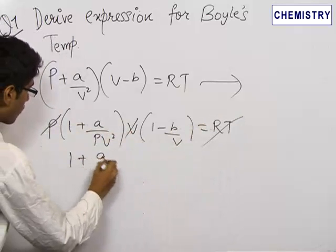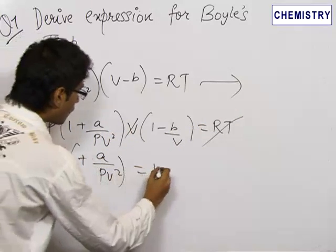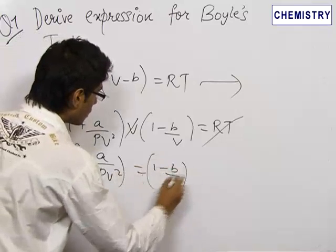So, 1 plus A upon PV square is equal to 1 minus B by V whole power minus 1.